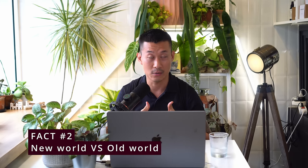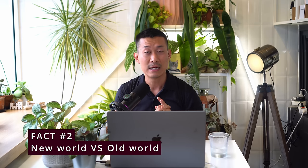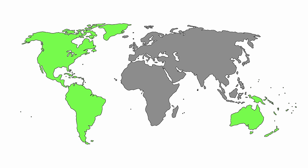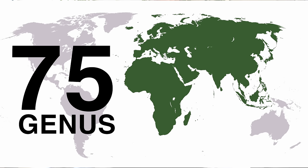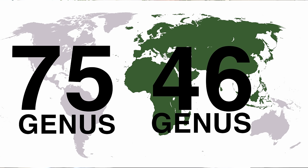Fact number two: we categorize aroids into two categories — new world and old world. The new world is basically the American continents, north and south, while the old world aroids are from the African, European, and Asian continents. The vast majority of genera occur in the new world with about 75 genera, while the old world has around 46 genera, with only about 10 genera overlapping — existing in both worlds. Comment down below if you can guess what those 10 genera are.